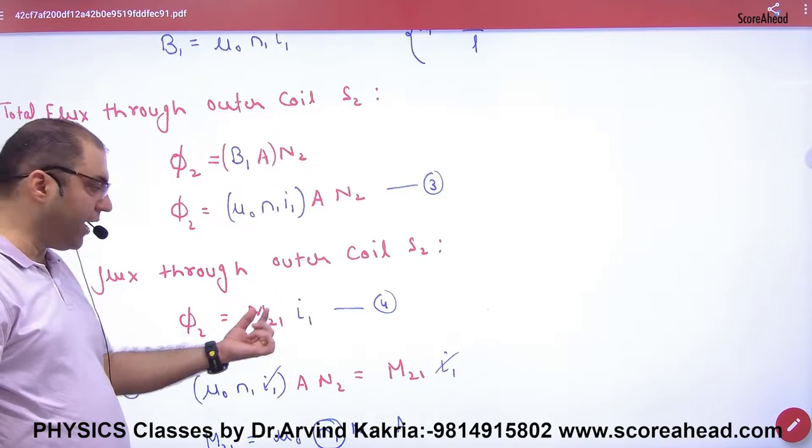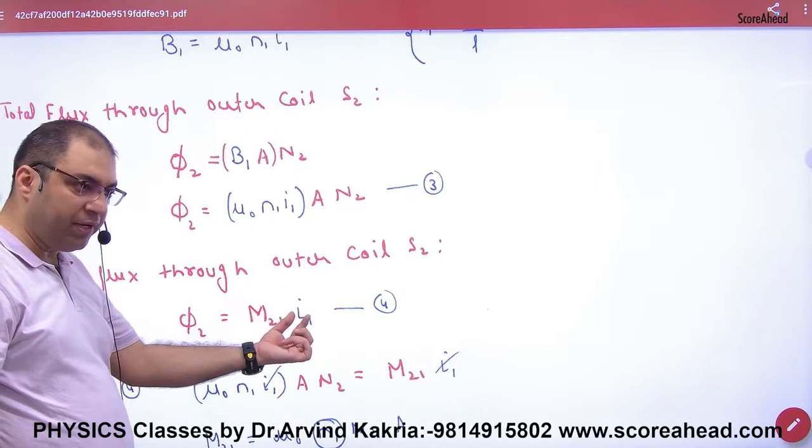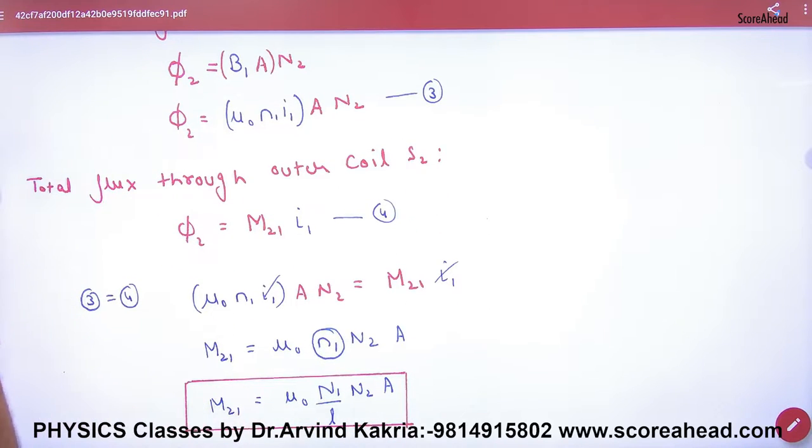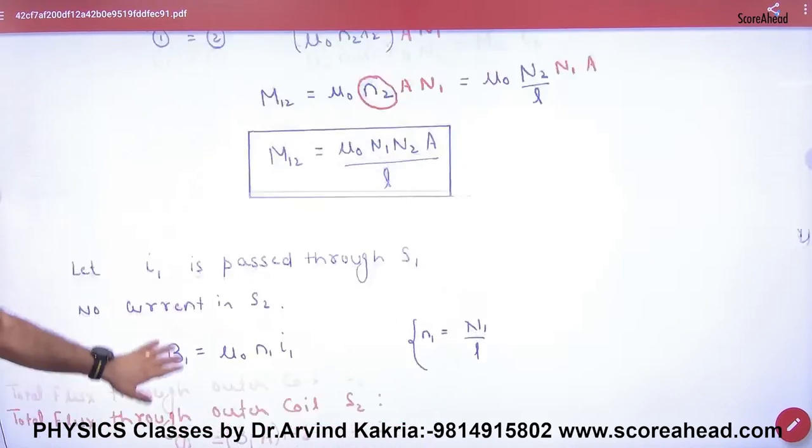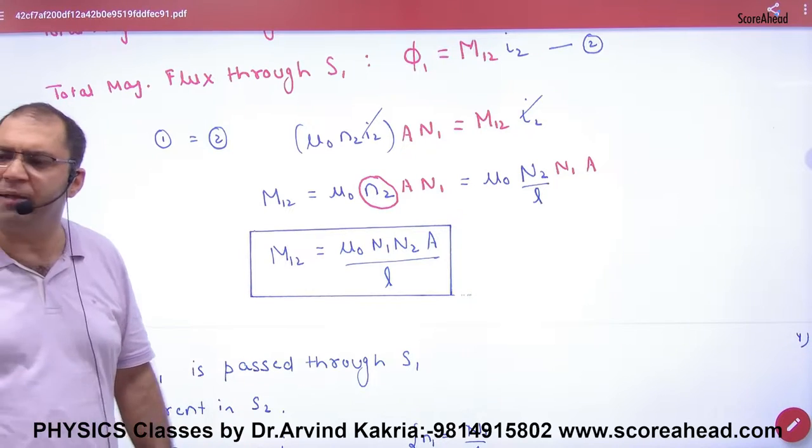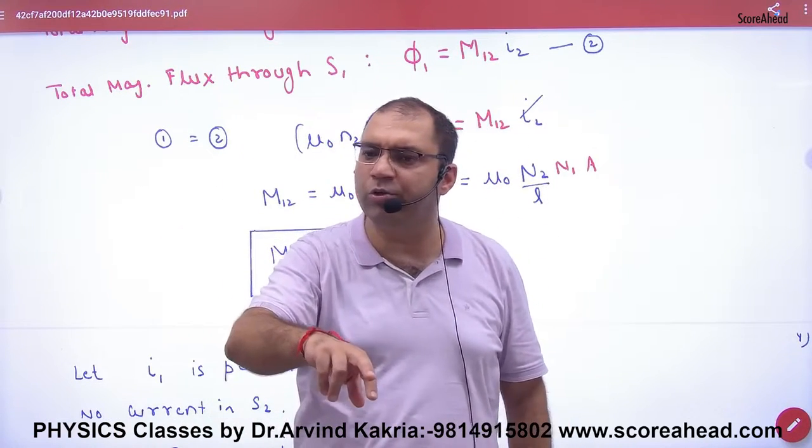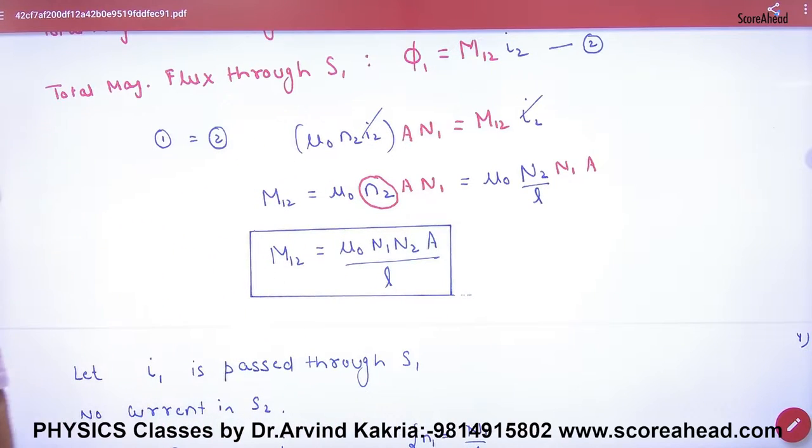φ is M i. Primary's current, secondary's flux. Equate these two and your answer will be the same. In school or NCERT, if proof is asked, you don't need to do it twice. The first part is sufficient. This is shown twice to prove that whichever you pass current through, M value will be exactly the same.